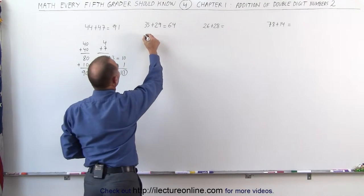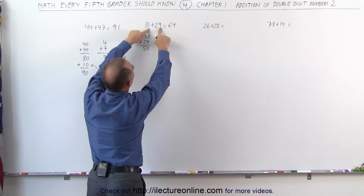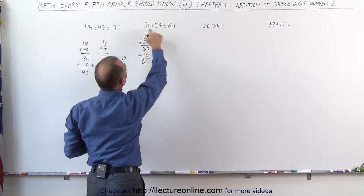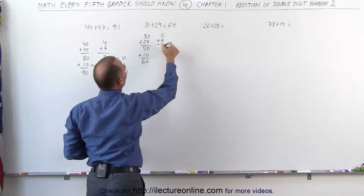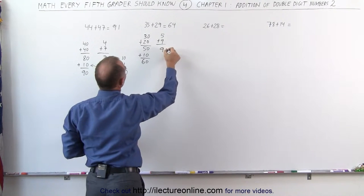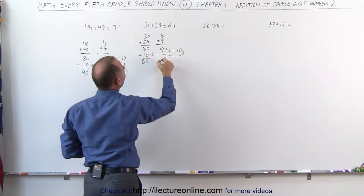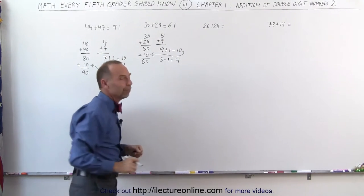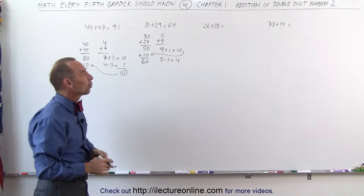Again, how did we do that? We looked at 30 plus 20, that gives me 50, but I have to add 10 more because I know that these two together will add up to more than 10. So I add another 10 to that to get me 60. So now I had 5 plus 9. I needed one more to the 9 to make that a 10. I subtracted the 1 from the 5. 5 minus 1 is equal to 4. Add that to the 60 to give me 64. Maybe it's beginning to make sense now. Let's try another one.